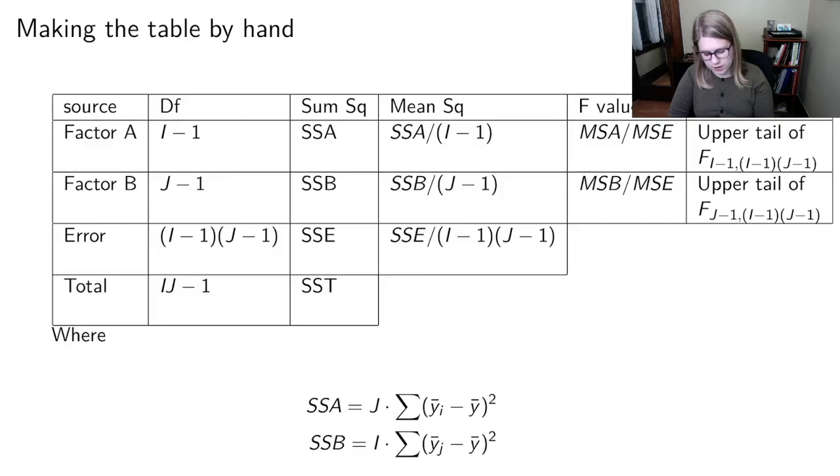We can find our sums of squares. Instead of just having SSM, we have it broken down into SSA and SSB for our factor A and factor B. But we still have our SSE, we have our SST.